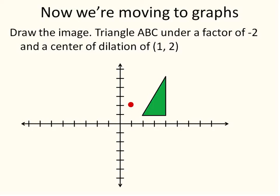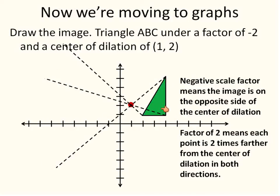Now we're going to move on to graphs. You'll usually get a question like this: draw the image of triangle ABC under a scale factor of negative 2, with the center of dilation at (1, 2). They'll give you the center of dilation and the coordinates of triangle ABC, and you'll have to draw the image. You start at the vertices and draw lines through the center of dilation. Because it's a negative scale factor of negative 2, the image will be on the opposite side of the center of dilation — not on the same side as a positive scale factor would be.